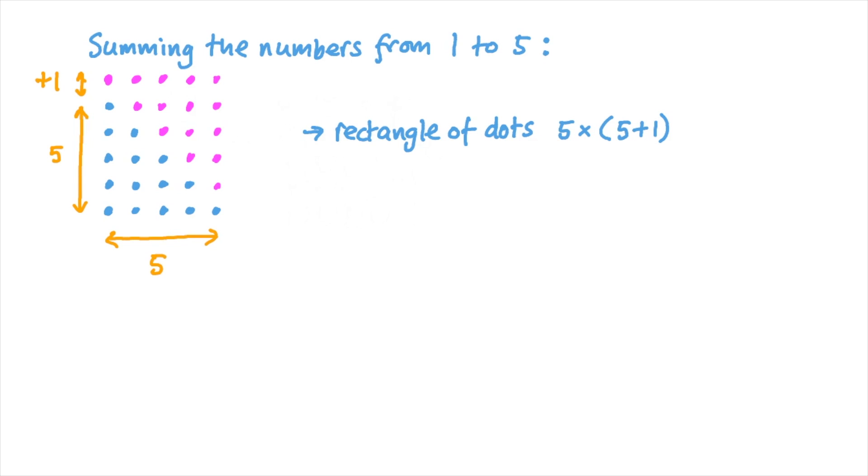Now we've got a rectangle of dots with 5 columns and 5 plus 1 rows. We've got twice as many dots as we need, but more importantly they make a nice rectangular pattern which makes them easy to count. In this configuration, we just need to do 5 times 6 to give us 30 dots. But the number of dots that we're looking for is half that number, and a half times 30 is 15. So there were 15 blue dots, or in other words, summing the numbers from 1 to 5 gives us 15.